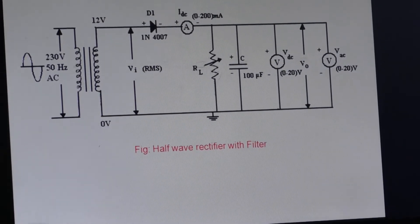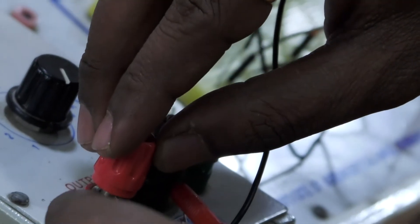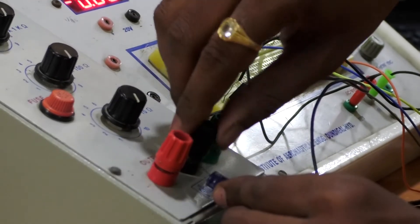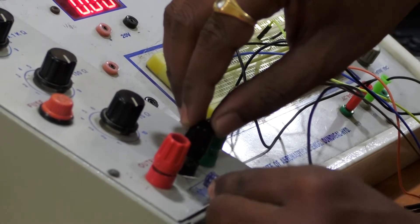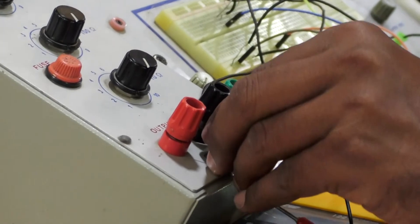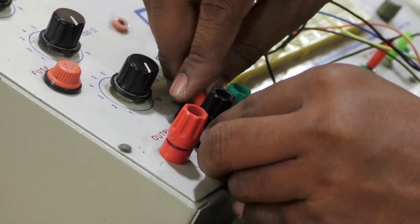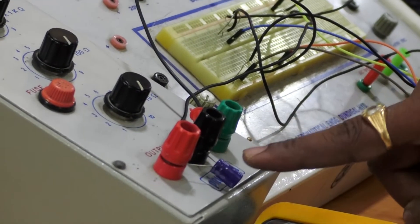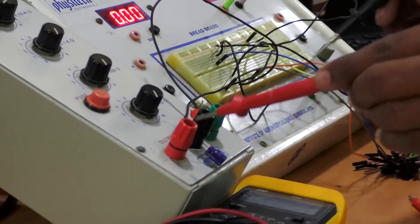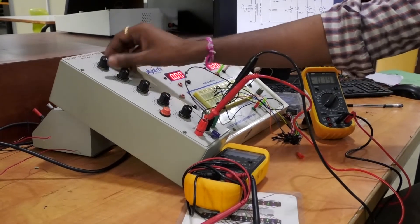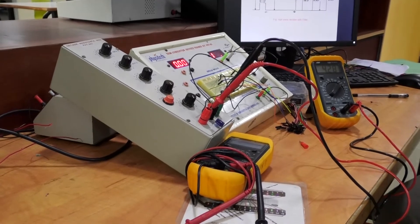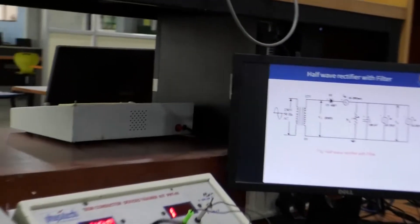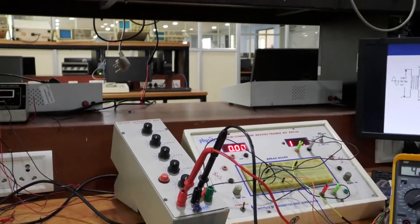Here I am going to place the 100 microfarad capacitor. The positive terminal of the capacitor is connected to the positive terminal of the load resistor, and the negative terminal of the capacitor is also connected to the negative terminal of load resistance. Now we need to observe the characteristics of this half-wave rectifier with filter. The procedure is the same — by varying the load resistance, we need to observe the IDC value, VDC value, VAC value, as well as the output signal.